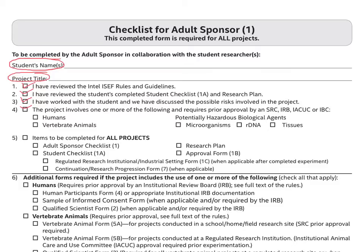The sponsor must also check that all the required forms are present: the adult sponsor checklist which is Form 1, the student checklist which is Form 1a, the research plan for the experiment, and the approval form which is Form 1b — required for every member of the group if it's a team project.